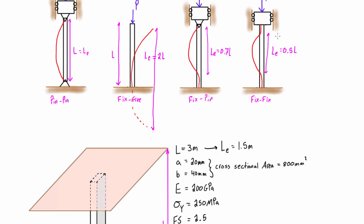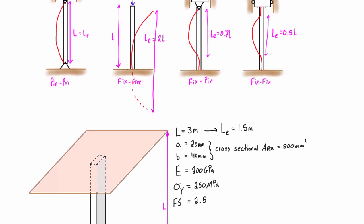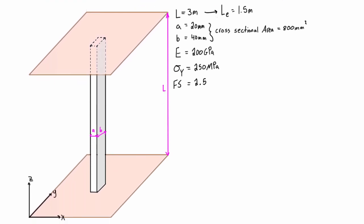That is coming directly from a couple videos ago where we talked about that. So when we start talking about this for buckling, this rectangular column can buckle in two different directions or planes basically.